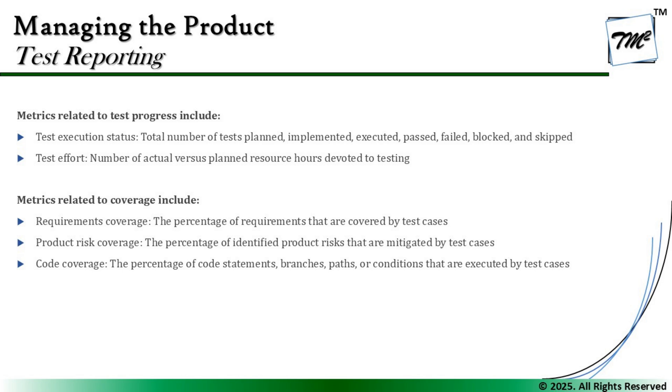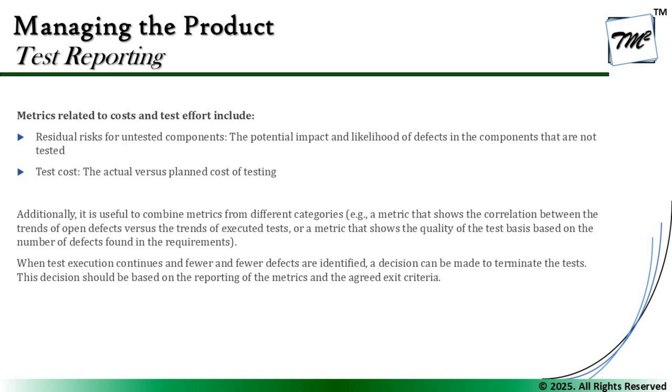Last but not least, we also discuss cost and effort matrices. These include residual risk for untested components — the potential impact and likelihood of defects in components that are not tested — and the actual versus planned cost of testing. Monitoring cost against plan helps check the effectiveness of planning and understand how much was spent beyond the plan, which improves planning for upcoming projects and also demonstrates the extra value added to quality in the current project.